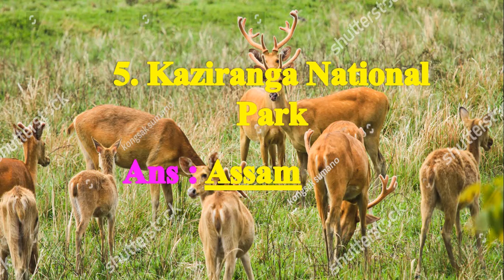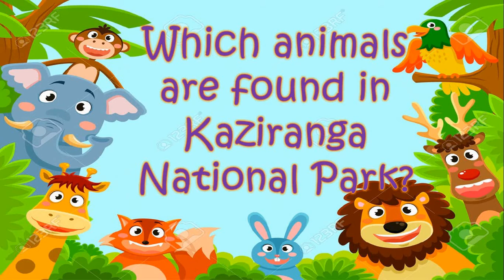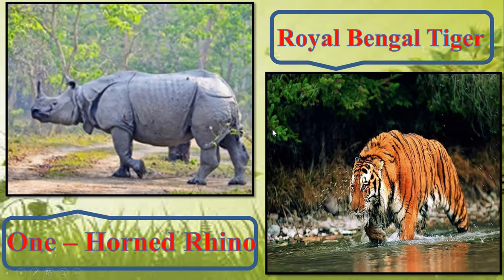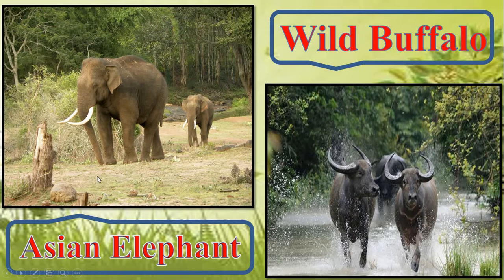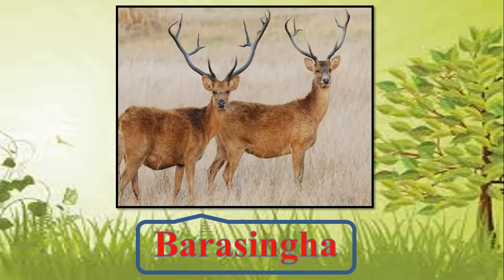Now which animals are found in Kaziranga National Park? In Kaziranga National Park, animals found include the One-Horned Rhino, the Royal Bengal Tiger, Asian Elephant, Wild Buffalo, Barasingha, and many other animals.